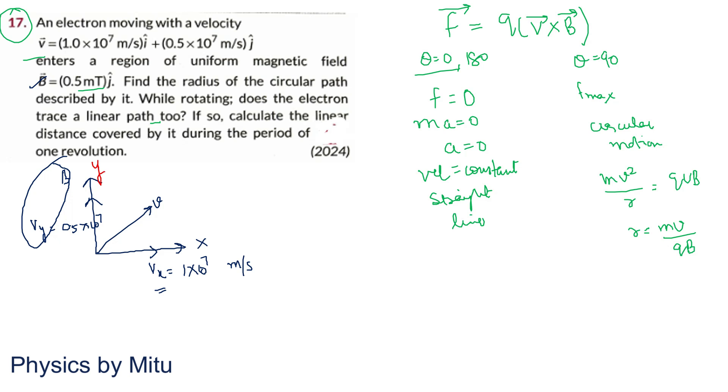Magnetic field is along Y. And the direction of current - if the electron is in X direction, then the current direction is minus X. So you apply Fleming's left hand rule.